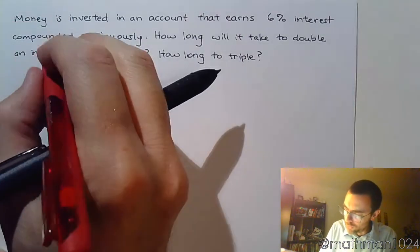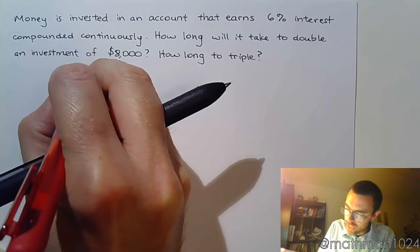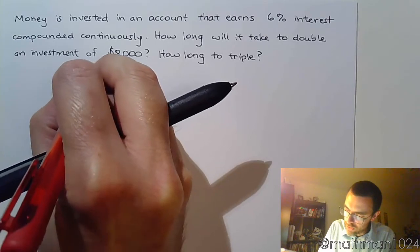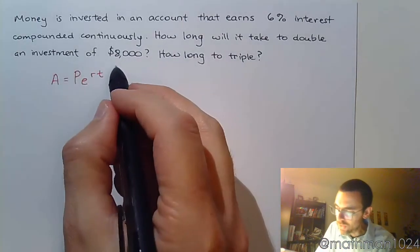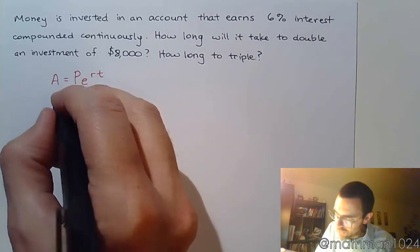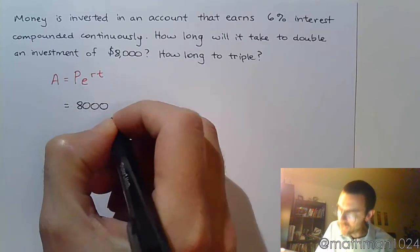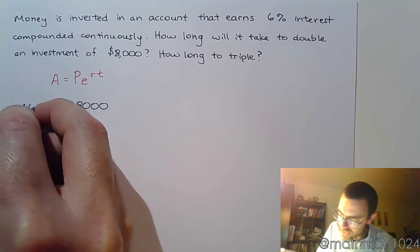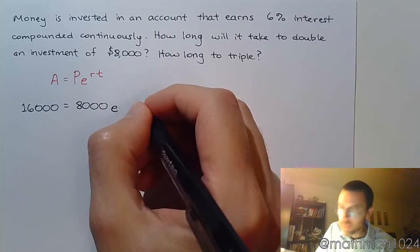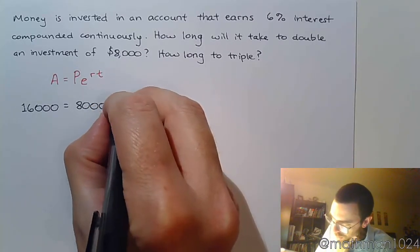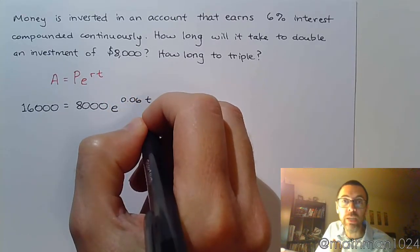Going back to our formula for continuous compounding: A equals P times e raised to the RT. If I want to double an investment of eight thousand, that means I'm investing eight thousand and I want a final value of sixteen thousand dollars. I have my e, my rate which is 0.06, and I'm trying to find my value of T — my time.